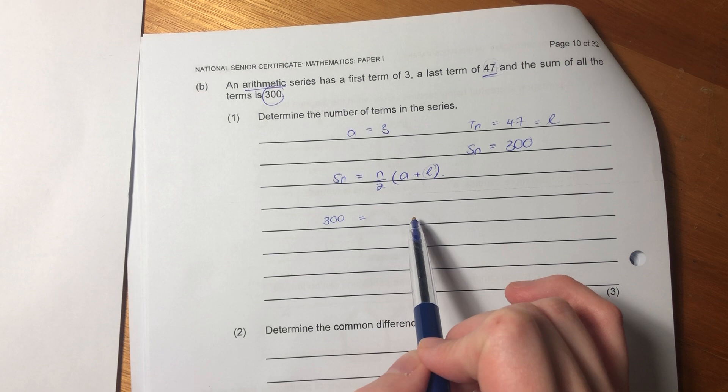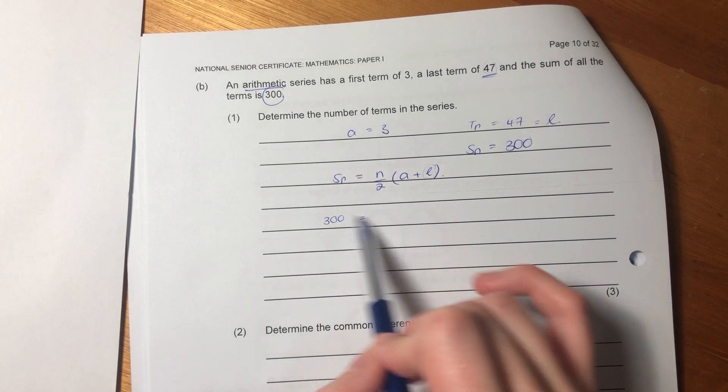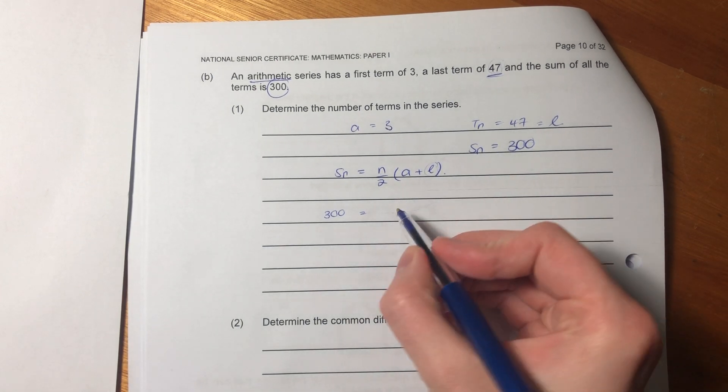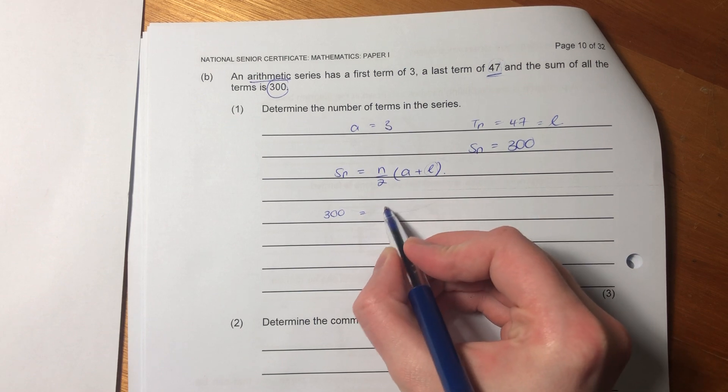It's just an additional way of doing arithmetic series. And that's why they're testing us. So let's sub this in. We don't know what N is. But we do know what A is and we do know what the last term is.